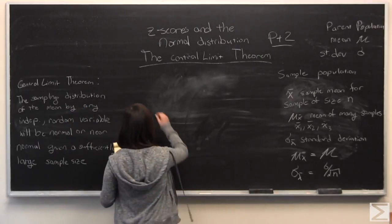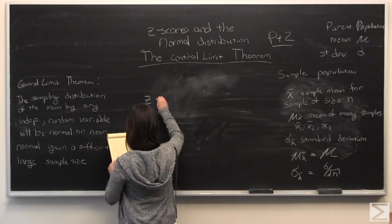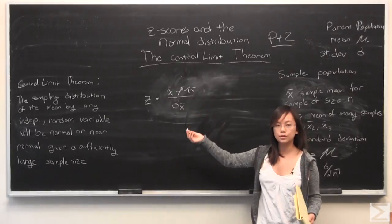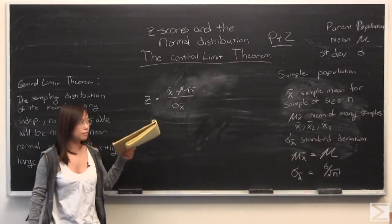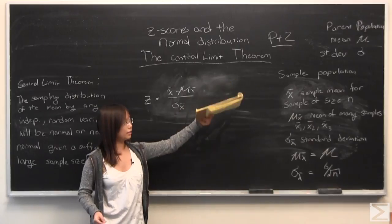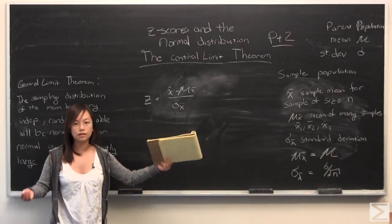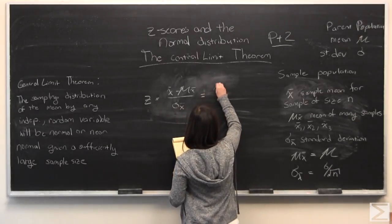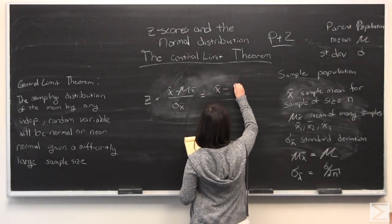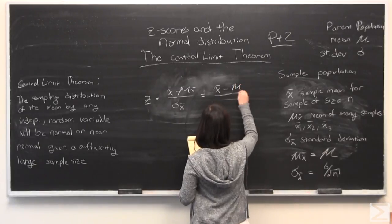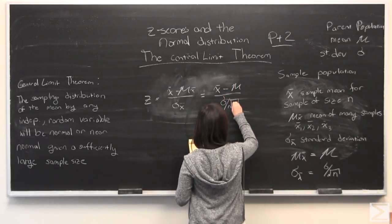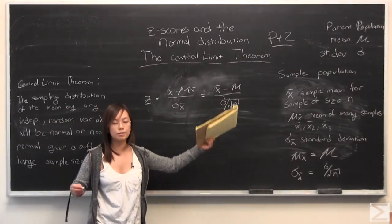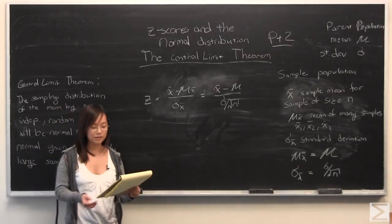So if you recall, z-score was given by this. And I have put it in this form with x bar because we're talking about a sample and not the population. But since we have, as given, the parent population mean and standard deviation, we can then turn this into something we can work with given parent population information and not necessarily sample population. And so this is what the z-score turns into when you're talking about a sample population instead of the parent population because you've taken samples from the parent population.